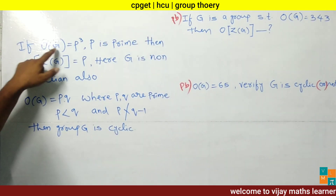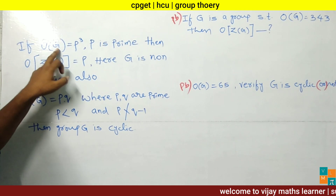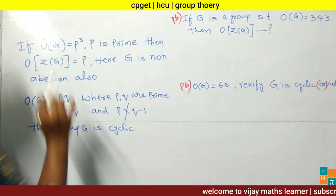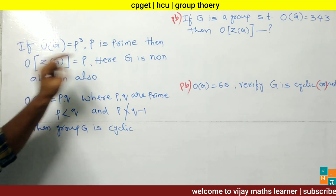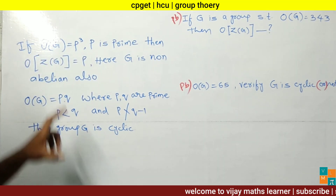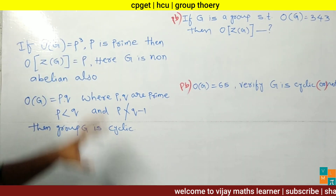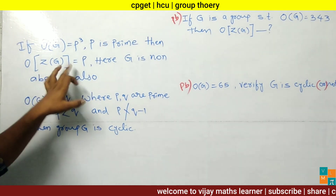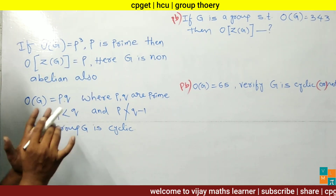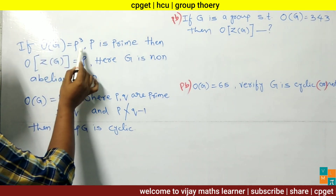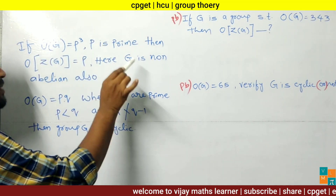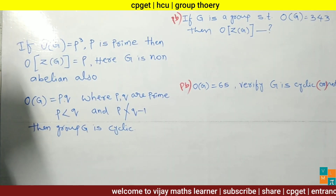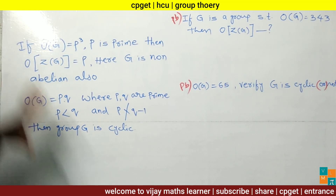Now let's look at the first result. Here G is a group and Z(G) means the center of the group. If the order of the group equals P^Q where P is a prime number, then the order of the center of the group equals P. Remember: if order of the group is P^Q and P is a prime number, then the order of the center of the group is P. Here G is also non-abelian.